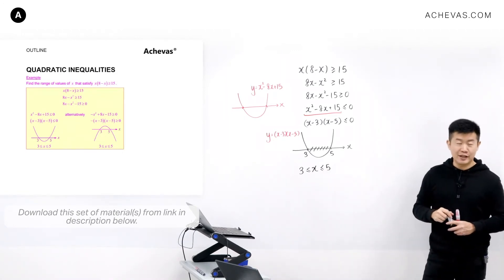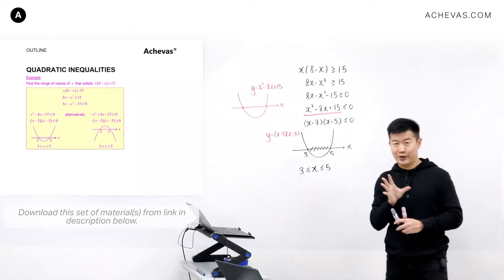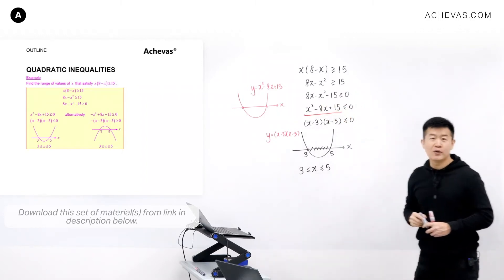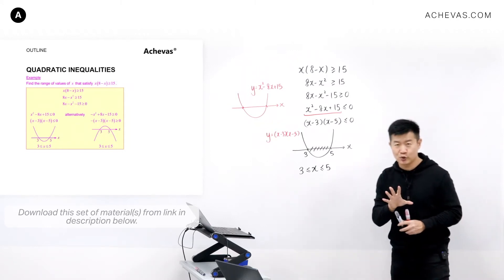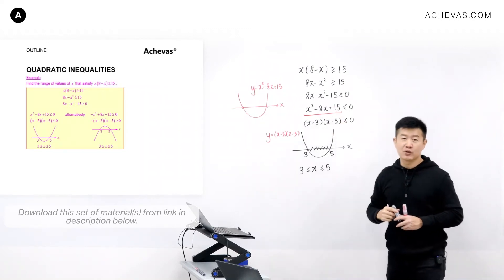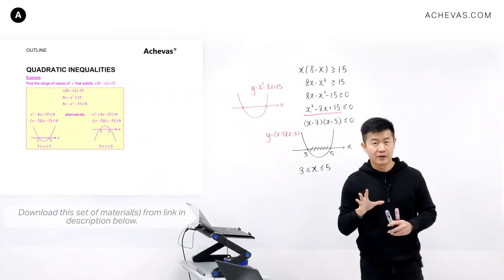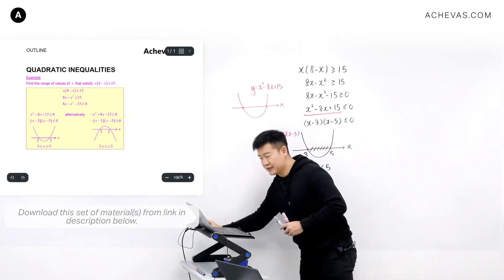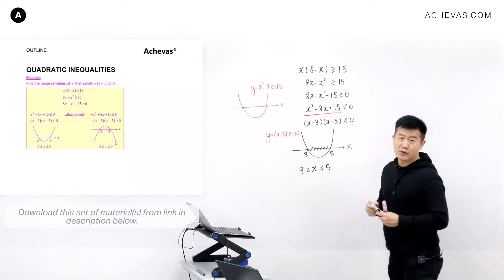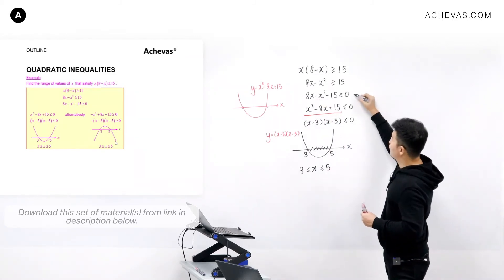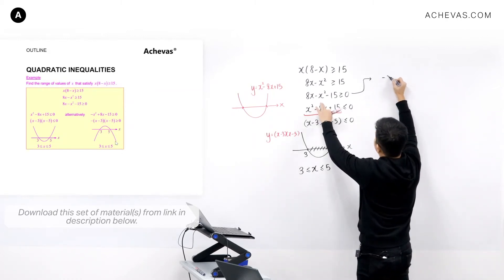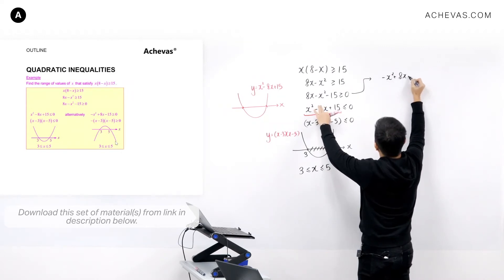This is how we solve a quadratic inequality. My preference was to ensure the coefficient of x squared is always positive, and I highly encourage you to do that. But what if we don't want to? Let's continue from the expression minus x squared plus 8x minus 15 is bigger or equal to 0 and see the alternative.